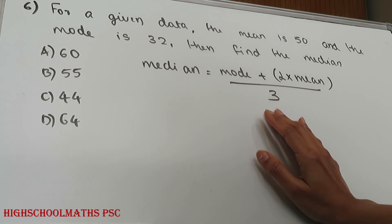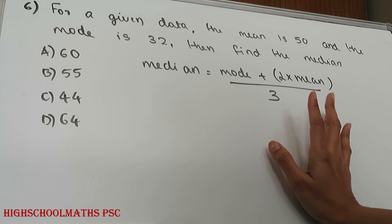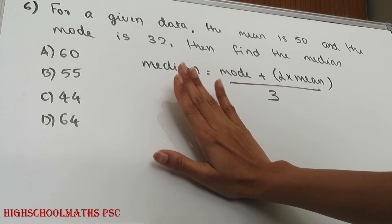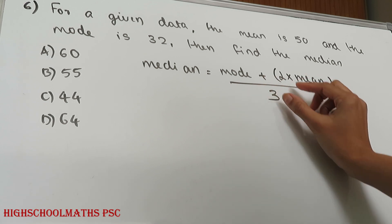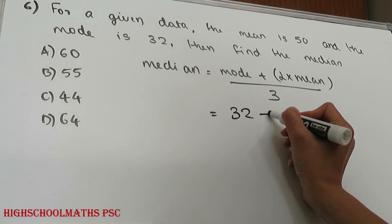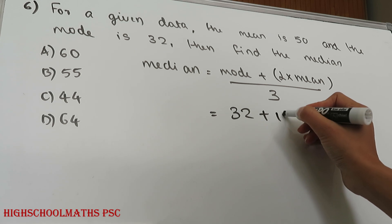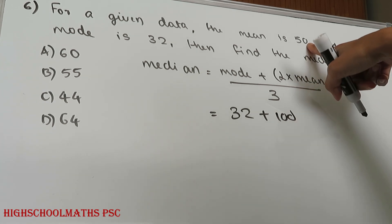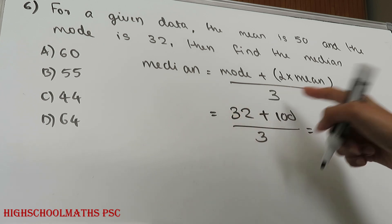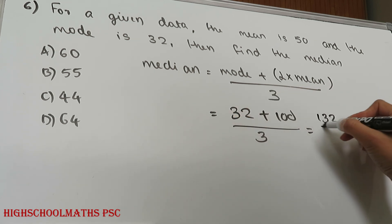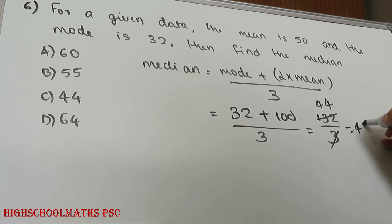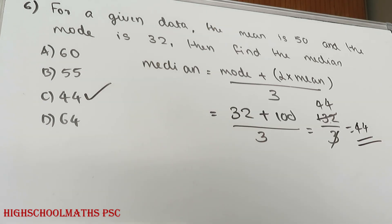For a given data, the mean is 50 and the mode is 32. Find the median. The formula is: median equals (mode plus 2 times mean) divided by 3. So median equals (32 plus 2 times 50) divided by 3, which is (32 plus 100) divided by 3. The answer is option C.